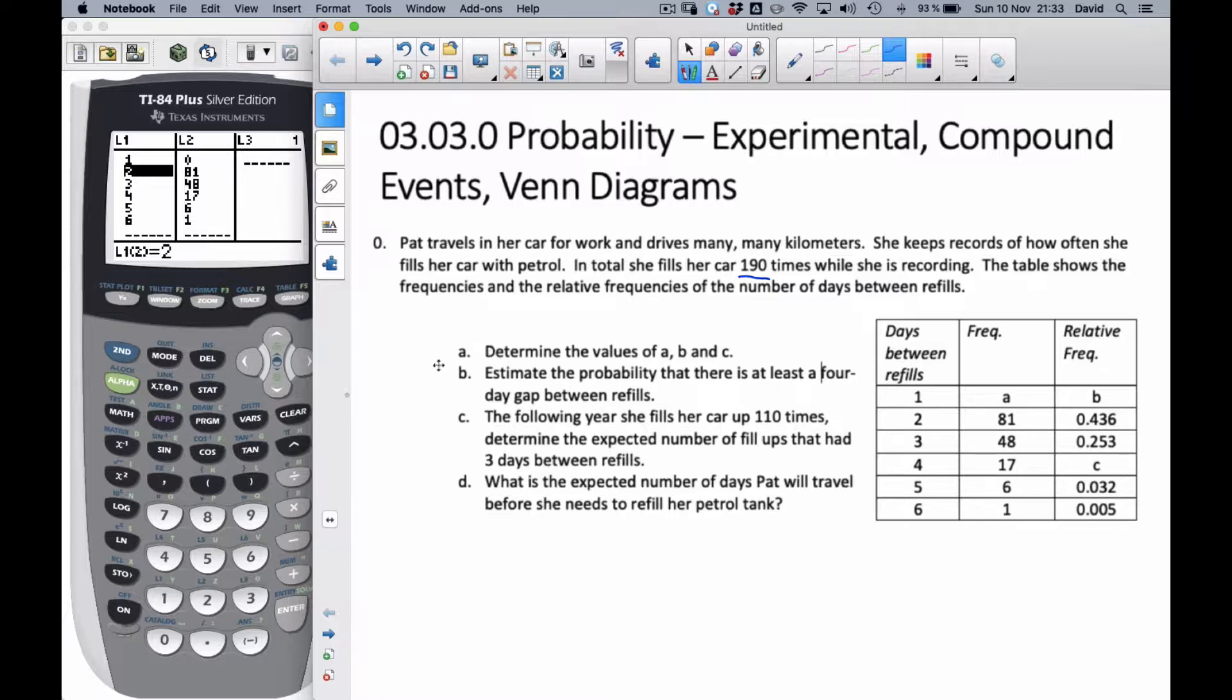Part A says determine the values of A, B, and C. Well, here's A, B, and C. I need this value here of A, and this is the frequency of all these values. I'm told that she does 190. So if I go 190, subtract all these values, I'll end up with A because I have to add up to that. One of the things I'm going to show you in this video, I'm going to use your calculator for many of these, so I'll show you some of the features that your calculator has.